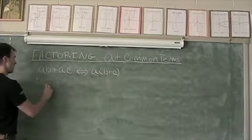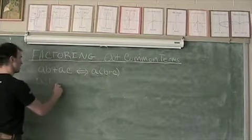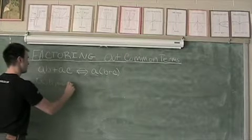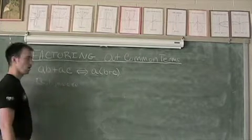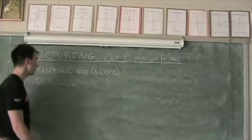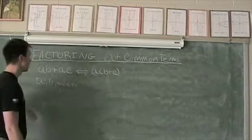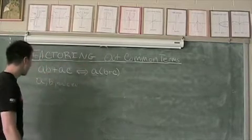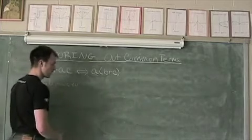This is provided that A, B, and C are not equal to zero. You can't really pull out a zero from something.